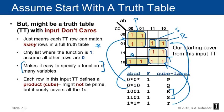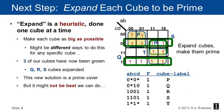Each row of the truth table with its input don't cares specifies a product — a cube — but it might not be prime. There's nothing that says this is a good cover; it is surely a cover of all the ones, but it's a bad Karnaugh map. Our goal is to start with this and do some optimization. The first step is to expand each cube to be a prime implicant.